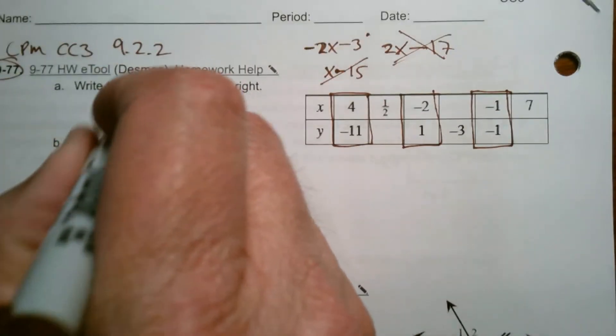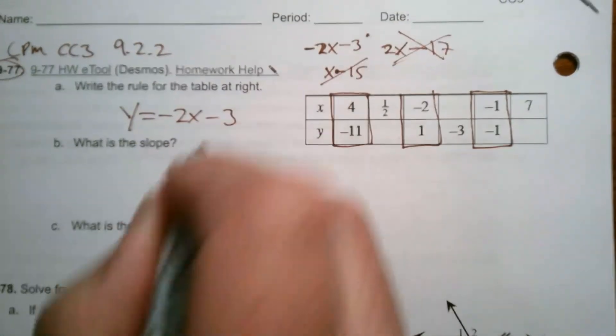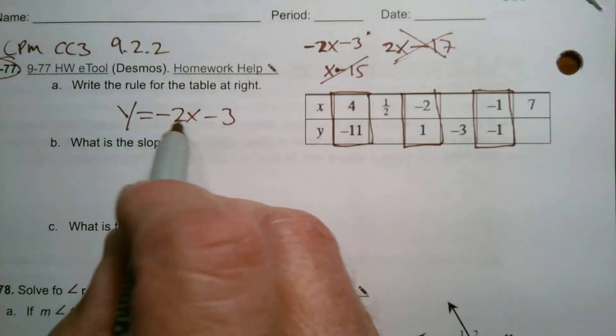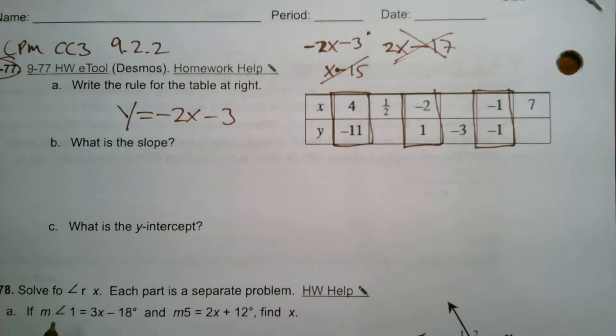So play around with the math until you get the combination that works. So what's my rule? My rule then is y is equal to negative 2x minus 3. Every y, you take the x and it's multiplied by negative 2, then subtract 3.